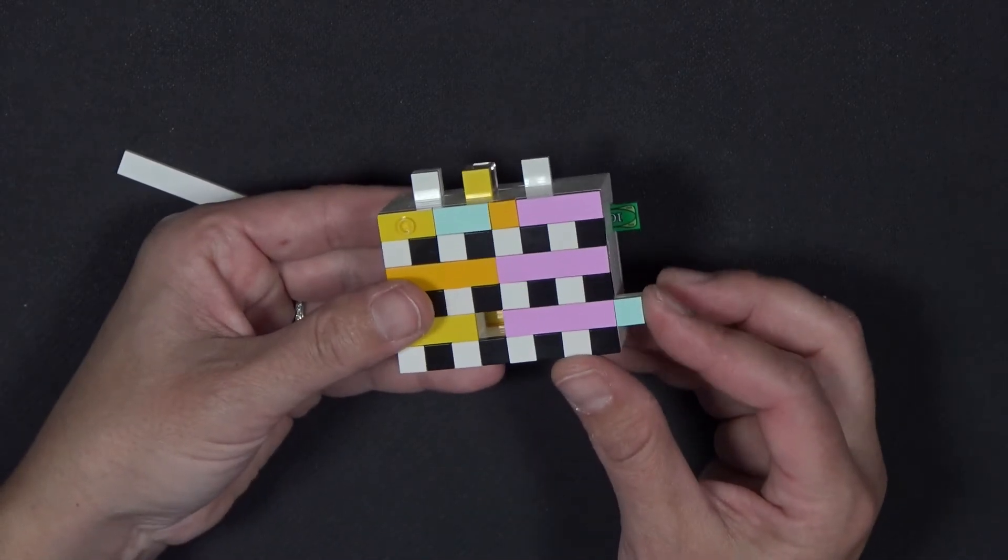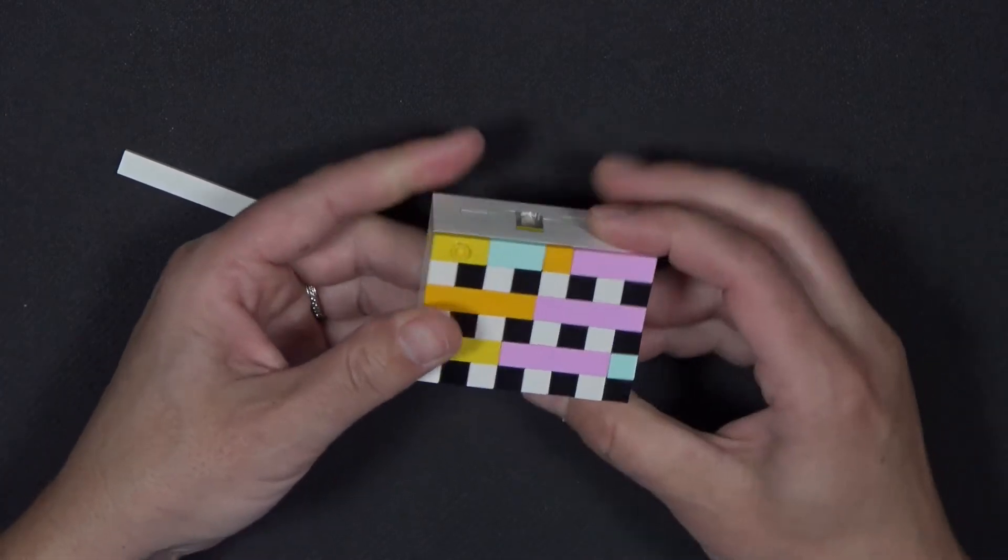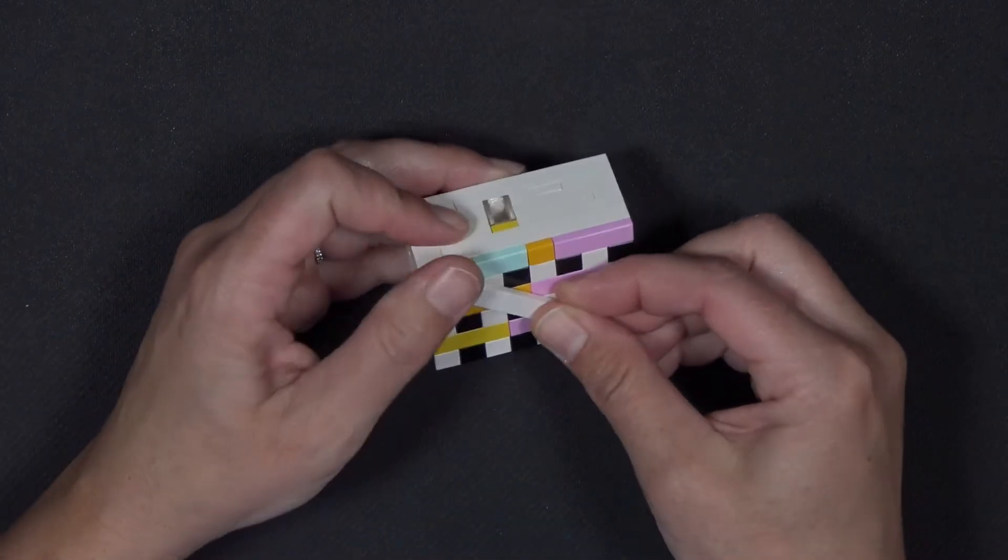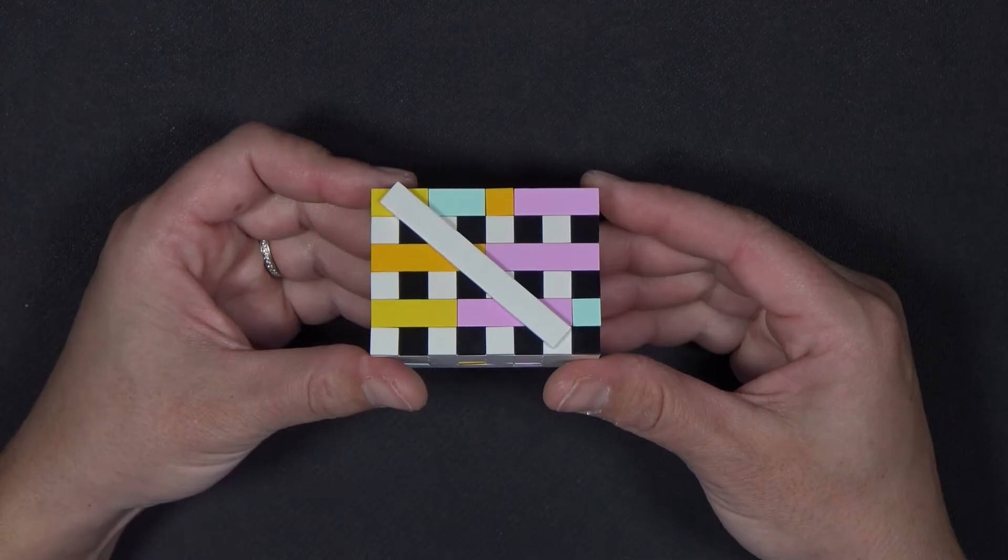To reset, it's simple. You just push all the pieces back in and place your tile back on top, and it's ready to be solved again.